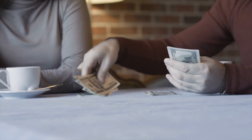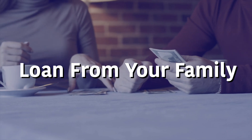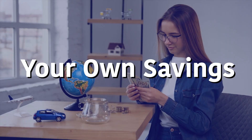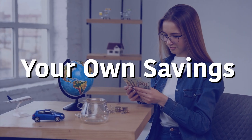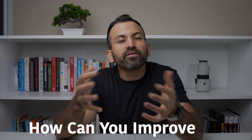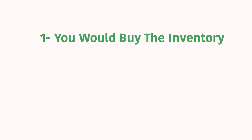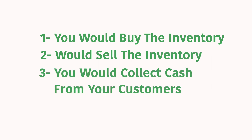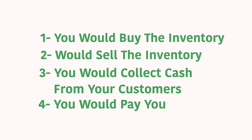The source of this money is typically a loan from your family, a bank loan, or your own savings. How can you improve this? The ideal scenario would work like this: number one, you buy the inventory; number two, you sell the inventory; number three, you collect cash from your customers; and number four, you pay your supplier.